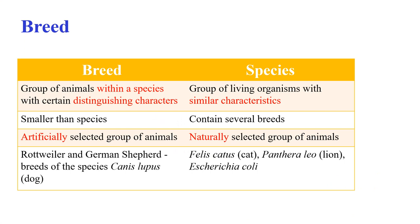Before going to breeding, let us see what is a breed and what are the differences between breed and species. Breed is a group of animals within a species that has certain distinguishing characters that are not found in other members of the same species. Whereas, species are a group of living organisms that share similar characteristics. Breeds are smaller than species; on the other hand, species contain breeds.